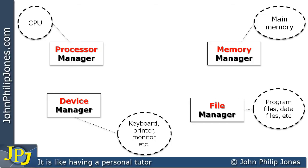For example, you would typically have a relationship between the process manager and the memory manager. A typical arrangement of cooperation could be as follows: the process manager is currently executing a particular application, and when the time slice for that application comes to an end, it needs to cooperate with the memory manager to find where the other application is in memory — specifically, the start address of memory containing that particular application.